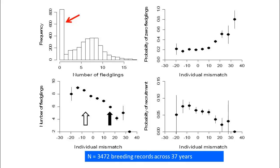Finally, the probability of recruitment also showed a strong negative quadratic relationship with individual mismatch. The net consequences of these effects at the individual level, in combination with the fact that average mismatch has increased steadily over time, is that directional selection for earlier breeding has intensified across the study period.